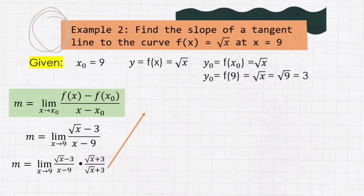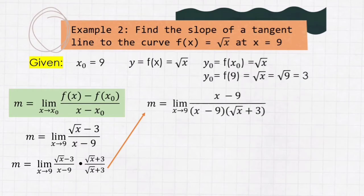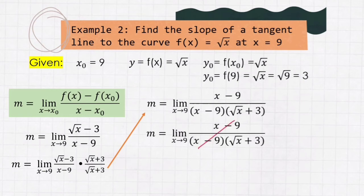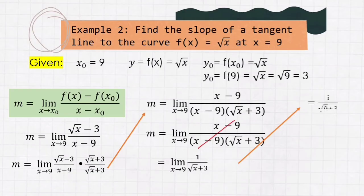To do that, we multiply (√x + 3) in both the numerator and denominator — always multiplying with the opposite sign of the given, which is (√x − 3), so we multiply by (√x + 3). We get m = limit of (x − 9) / [(x − 9)(√x + 3)] as x approaches 9, because √x · √x = x and (+3)(−3) = −9. We can cancel out (x − 9), leaving limit of 1 / (√x + 3) as x approaches 9. Substituting, we get 1 / (√9 + 3) = 1 / (3 + 3) = 1/6. Our final answer is m = 1/6.